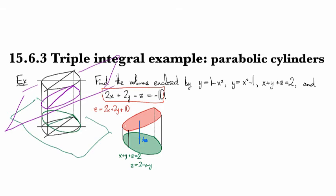Okay, so we've got, let's see, z equals two minus x minus y up to z equals two x plus two y plus ten, and we're doing volume, so we're going to integrate good old one dz. All right, now, what do we have left?